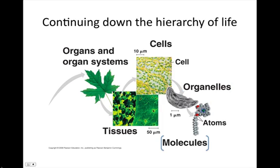All organelles are made from molecules, meaning that two or more atoms are bonded together. Finally, atoms are defined as particles that have a specific amount of protons, neutrons, and electrons.